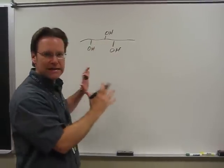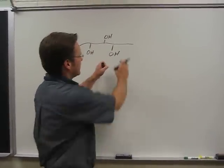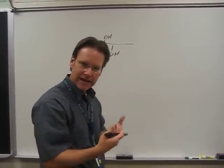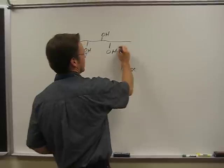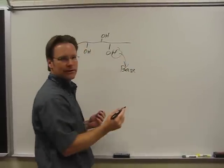Now if you add a base to this, what bases do is they remove or take hydrogen ions. So your base comes in, in this case it's a carbonate base, and it pulls the hydrogen off the cellulose.